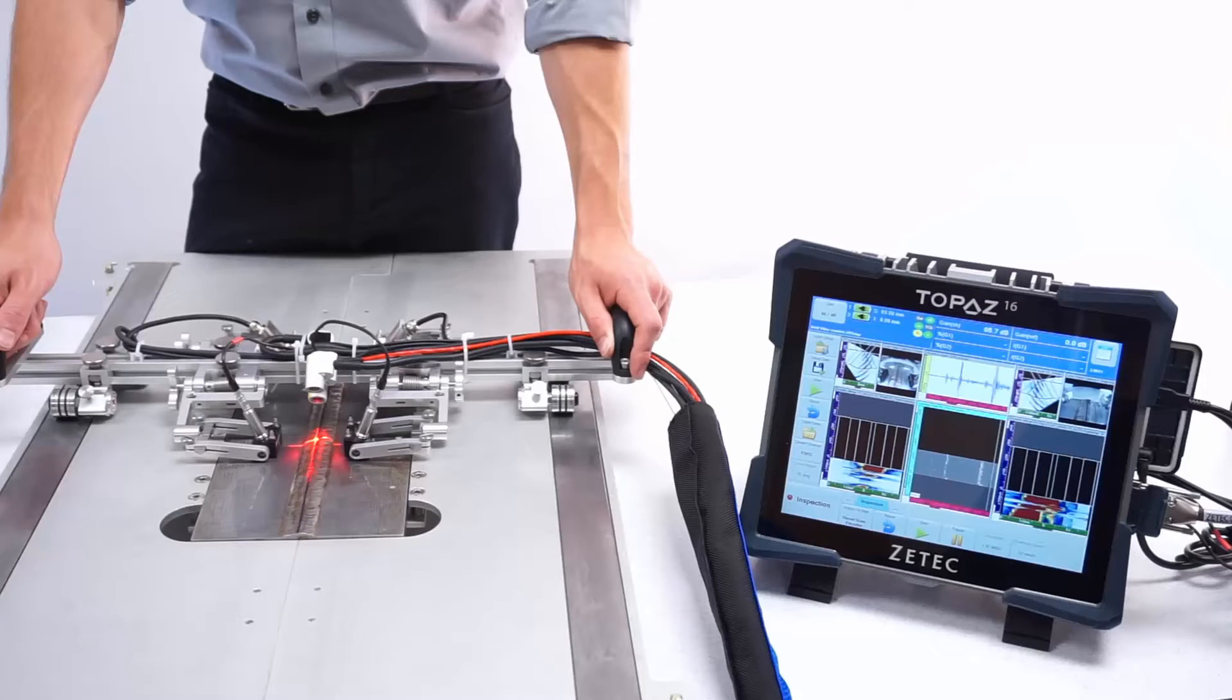The optional vision kit allows for the attachment of two micro cameras and a laser alignment guide to the weld crawler, all without compromising its tight clearance of just over 2 inches.